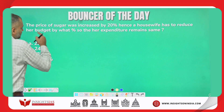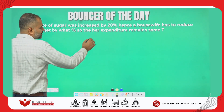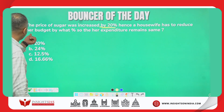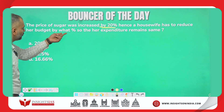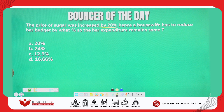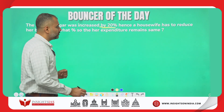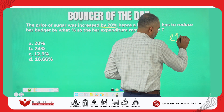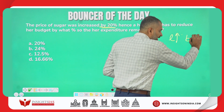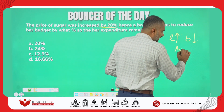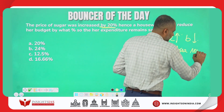The price of sugar was increased by 20%. Hence, a housewife has to reduce her budget by what percent so that her expenditure remains the same. This is very similar to: if the length is increased by 20%, breadth should be decreased by what percent so that area remains same.